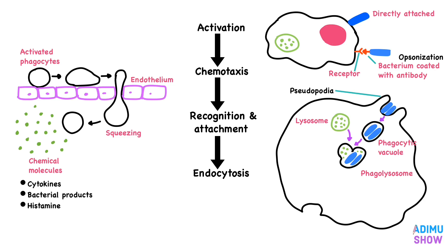This process is called endocytosis. Neutrophils have lysosomes which contain digestive enzymes such as proteases. Lysosomes fuse with the phagocytic vacuole to form a phagolysosome, which destroys and digests the bacteria. The residual body contains undigestible materials of the pathogen, which are removed from the neutrophil through exocytosis.